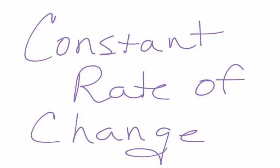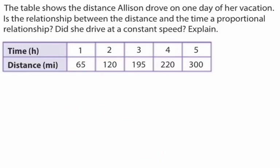All right, constant rate of change. Final thing right here, just real quick, you'll probably get this. You could even work ahead of me, but we're going to answer this question just to make sure that we understand constant rate of change and proportions. The table shows the distance Allison drove on one day of her vacation. Is this relationship between the distance and the time a proportional relationship? Did she drive at a constant speed?